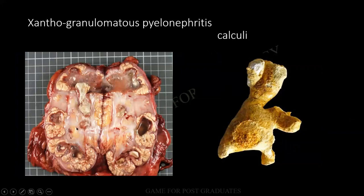Xanthogranulomatous pyelonephritis: you find there will be yellowish areas. It is actually a variant of chronic pyelonephritis in which you see large clear cells. Look at the multiple calculi — it is a typical staghorn calculus. Why is it called staghorn? Because it is a cast of the pelvic calyceal system, and therefore it has that appearance.